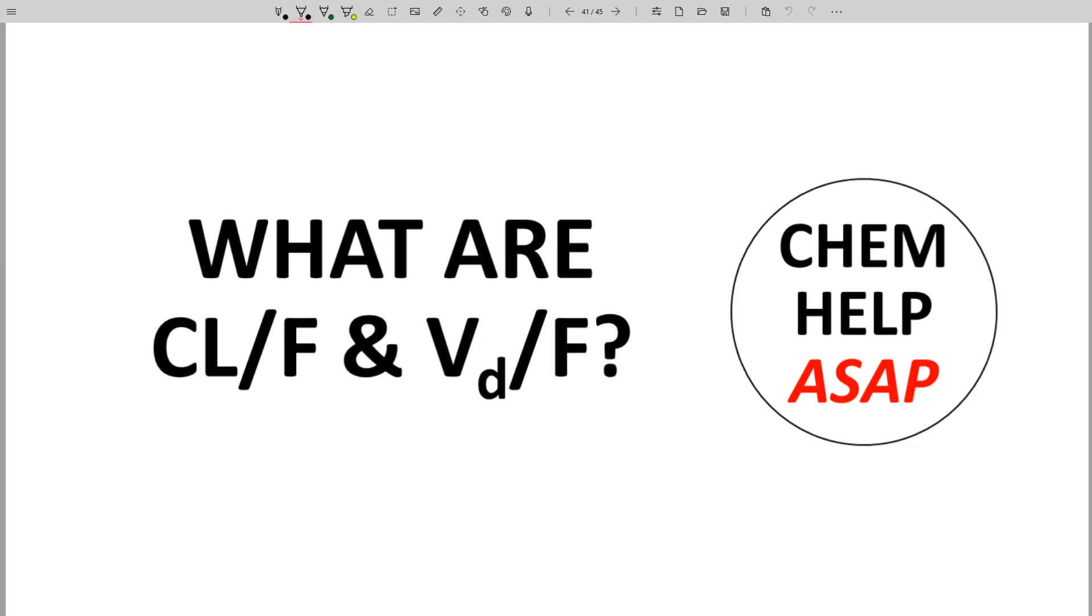Hello from Chem Help ASAP. Sometimes reported pharmacokinetic parameters don't appear as you might expect. Let's see two examples in CL over F and Vd over F.